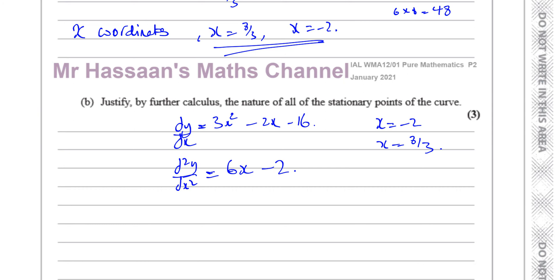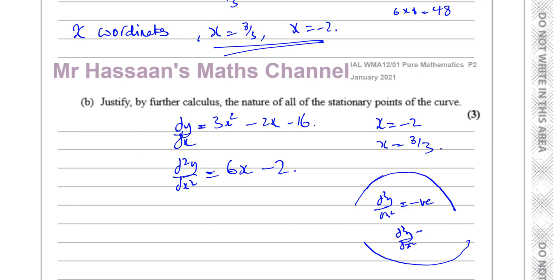If d²y/dx² is negative, the gradient is decreasing — the gradient starts off high, becomes zero, then becomes negative — which corresponds to a maximum. If d²y/dx² is positive, the gradient starts off negative, becomes zero, then becomes positive again — which corresponds to a minimum. So a maximum is when the second derivative is negative for that value of x, and a minimum is when it is positive.